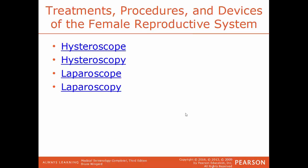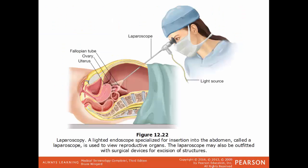The hysteroscope is a tool used to visualize the uterus — the process of viewing the uterus is hysteroscopy. The laparoscope is a tool used to visualize the abdominal wall — the process of viewing those structures is laparoscopy, where the laparoscope is inserted into the abdomen to view the abdominal organs and abdominal wall.